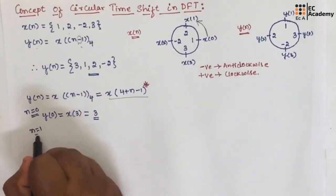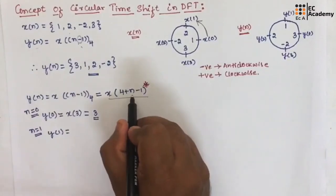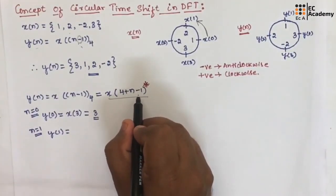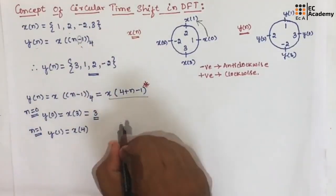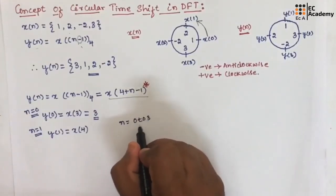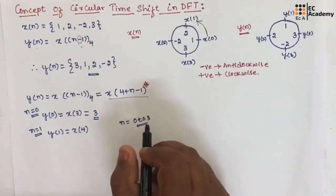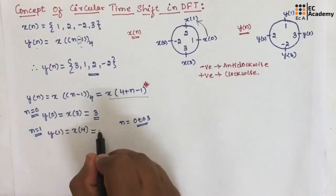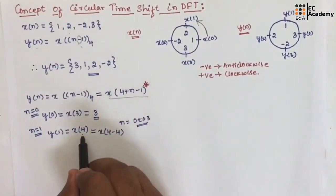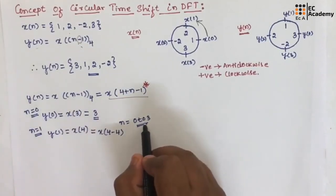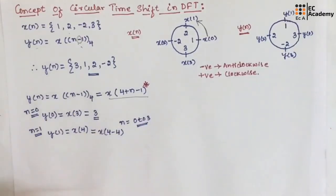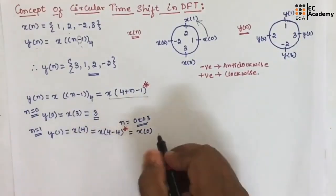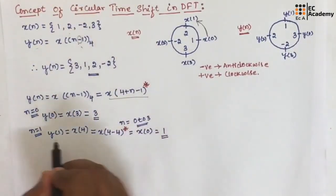In the same way, if you put n equal to 1, y of 1 will equal x of (4 plus 1 minus 1), which is x of 4. Now x of 4 is out of range of the given sequence, since n can only have values from 0 to 3. So we subtract with the length of the sequence: x of (4 minus 4) equals x of 0, which is 1. So y of 1 is 1.